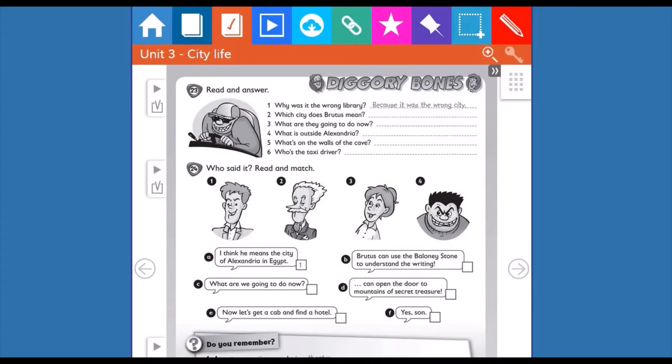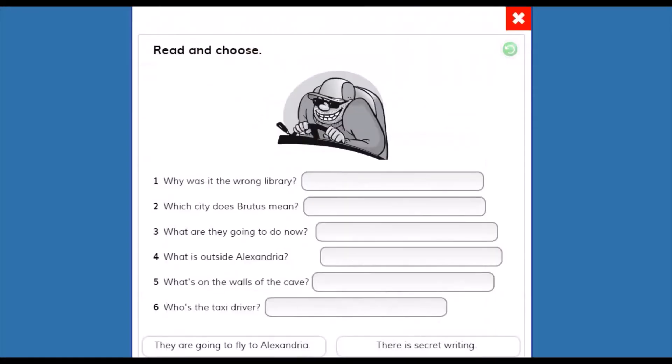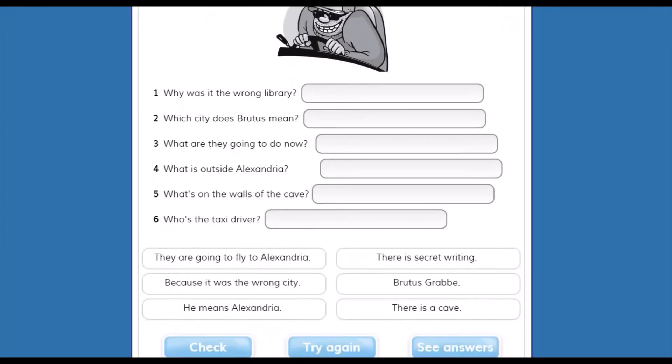We are going to start with activity number 23. We're going to read and answer. Vamos a tener que leer y responder. Esas preguntas, las respuestas las podemos encontrar en el video que acabamos de ver y también en la historia de su libro, la página número 33. Here we have the answers. We're going to read and we're going to complete.